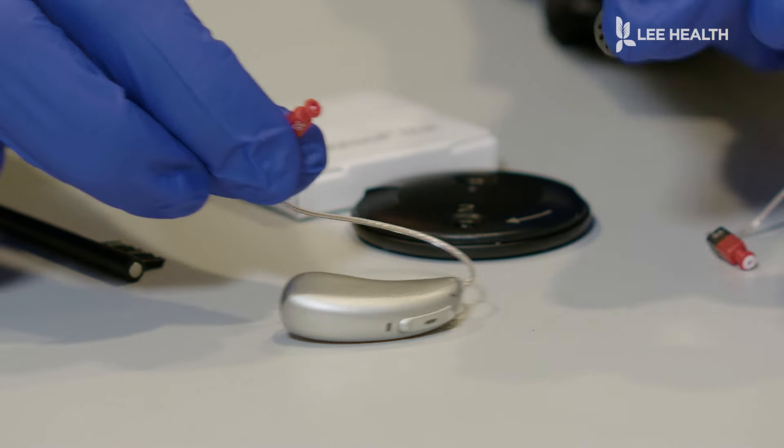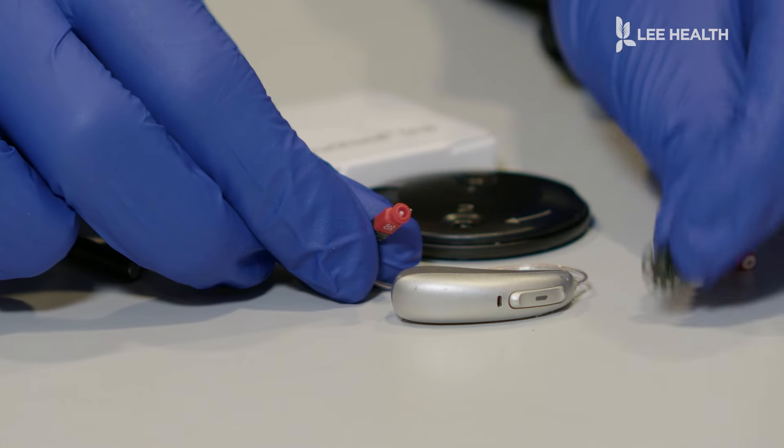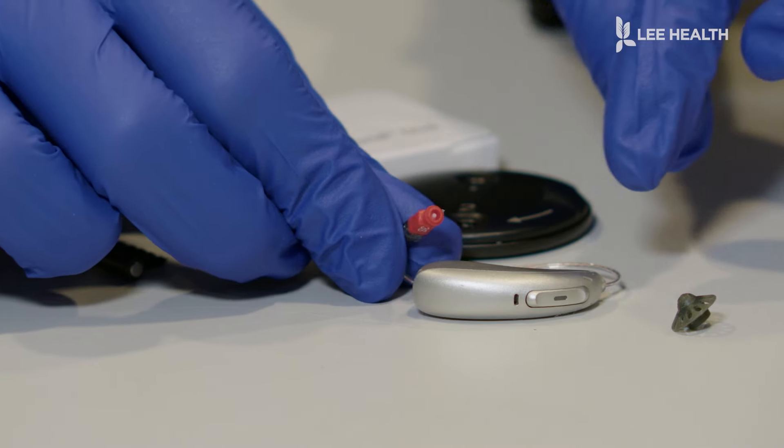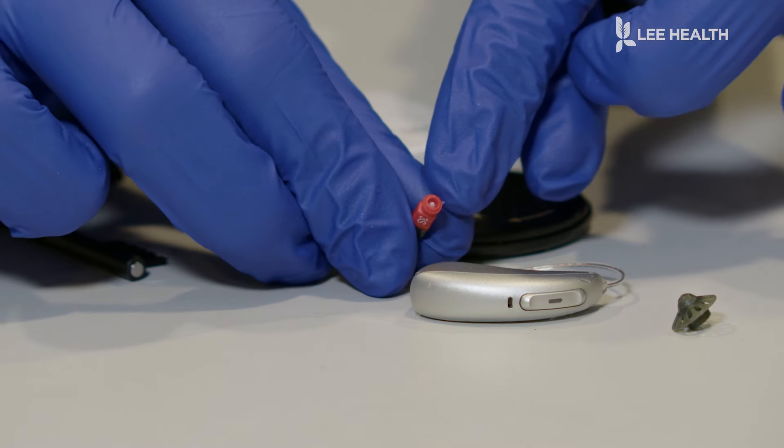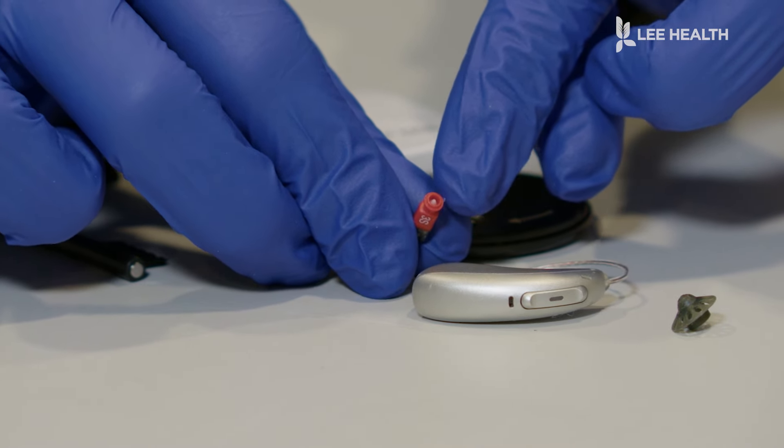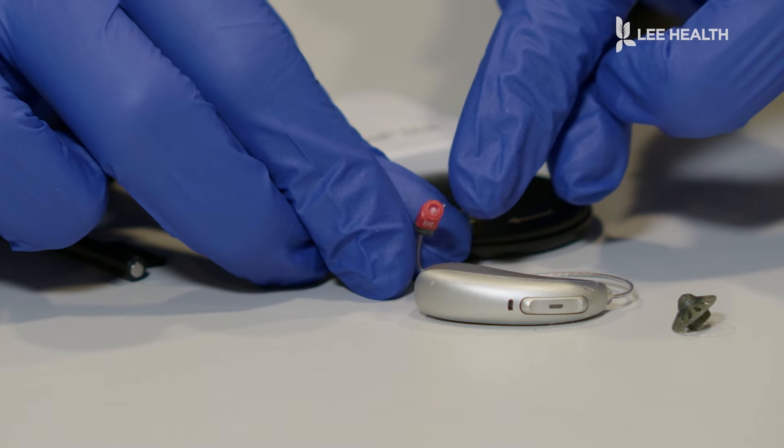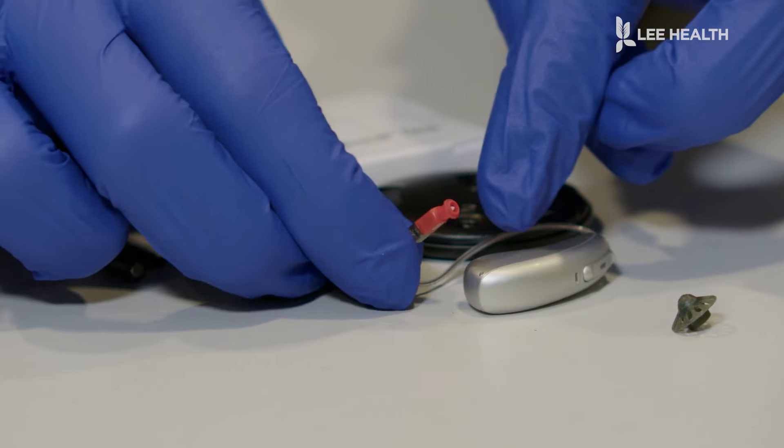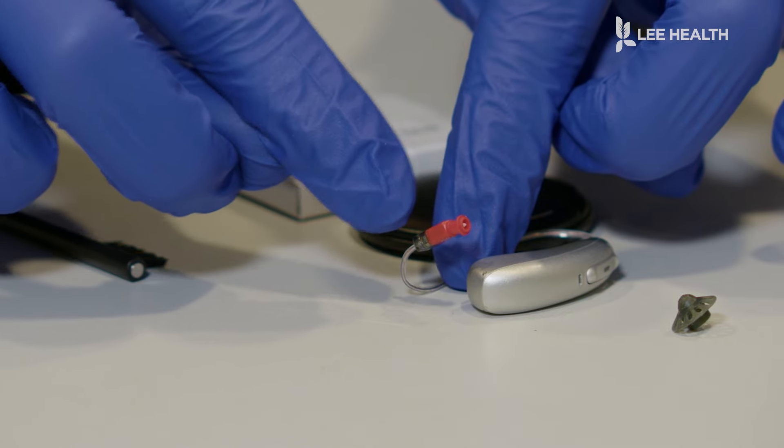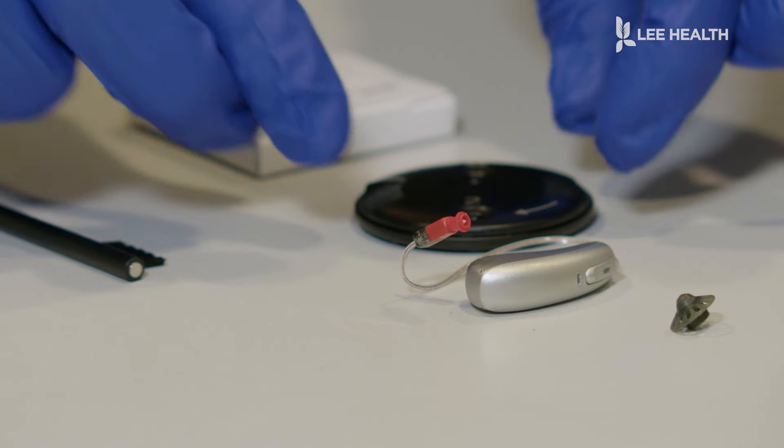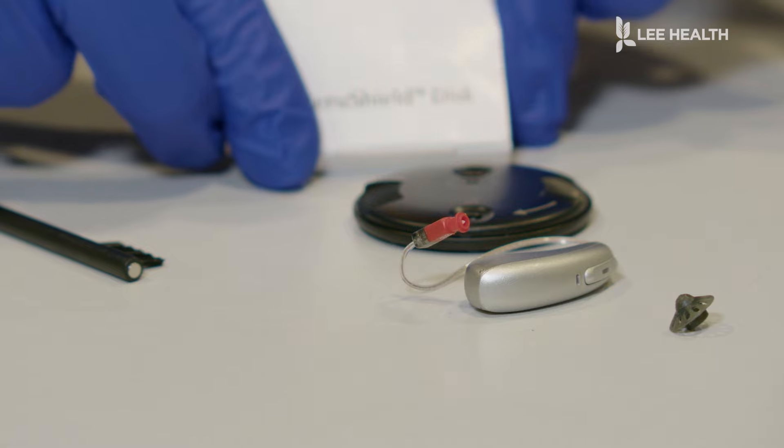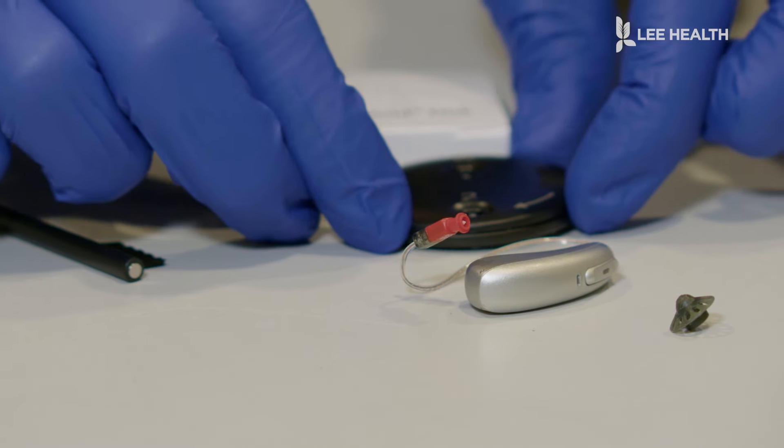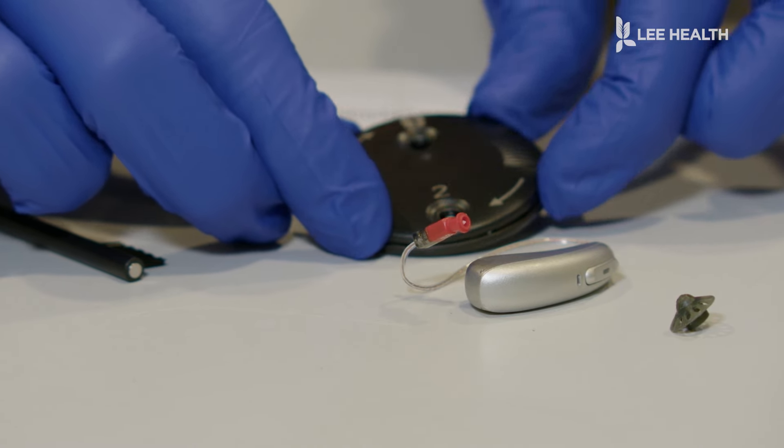So once that dome rubber tip piece is disconnected, you can put it to the side, and now we're focusing on the inside piece. This is called a wax trap or a wax guard, and it's designed to catch any wax or debris before it goes into the electronic computer component of the hearing aid. So you're going to take your Seroshield disc. If your wax trap system looks like this circle, this is what we're going to be using.